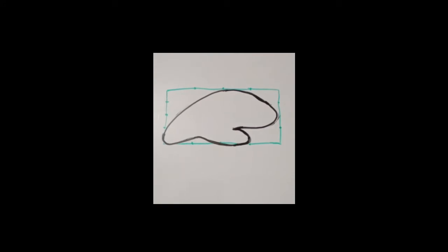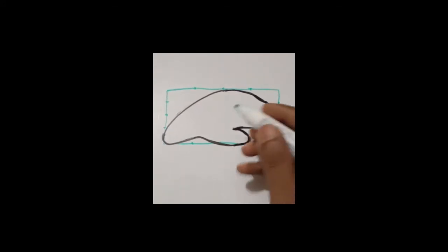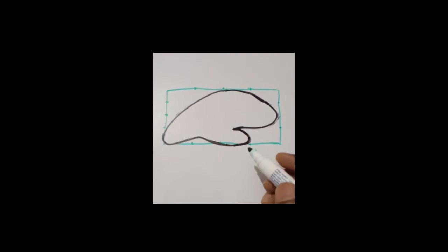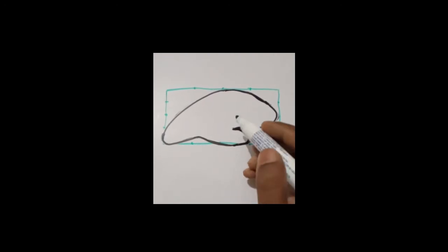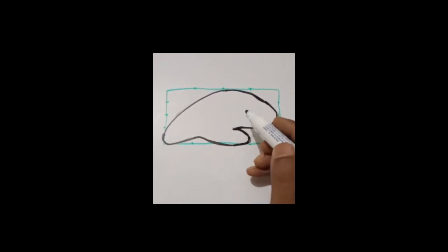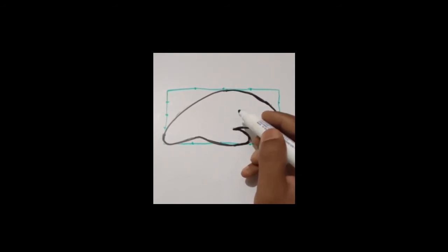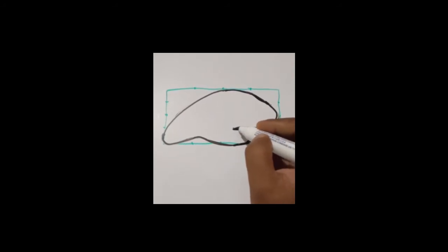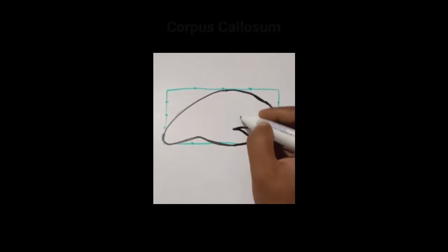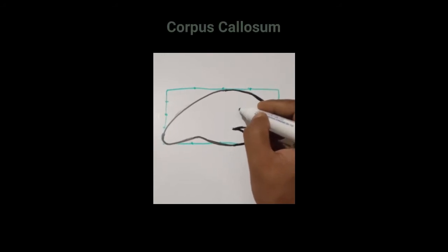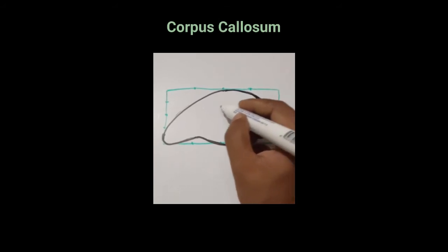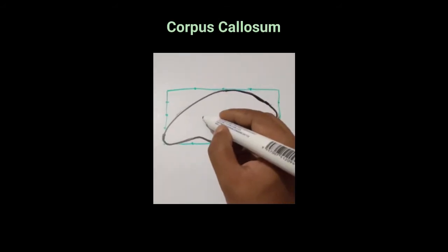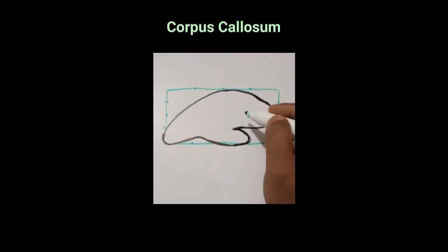Now I have to draw a special structure situated at the medial surface that is termed as the corpus callosum, which is a large white band — the commissural fiber — that connects both cerebral hemispheres with each other. For drawing the corpus callosum, I have to find out the area. I shall start the corpus callosum from here and then go behind and end here.